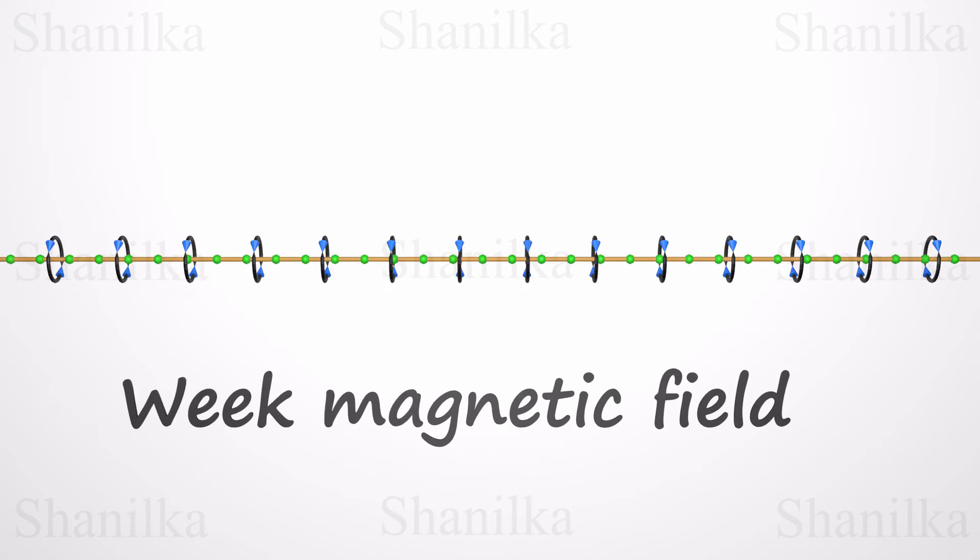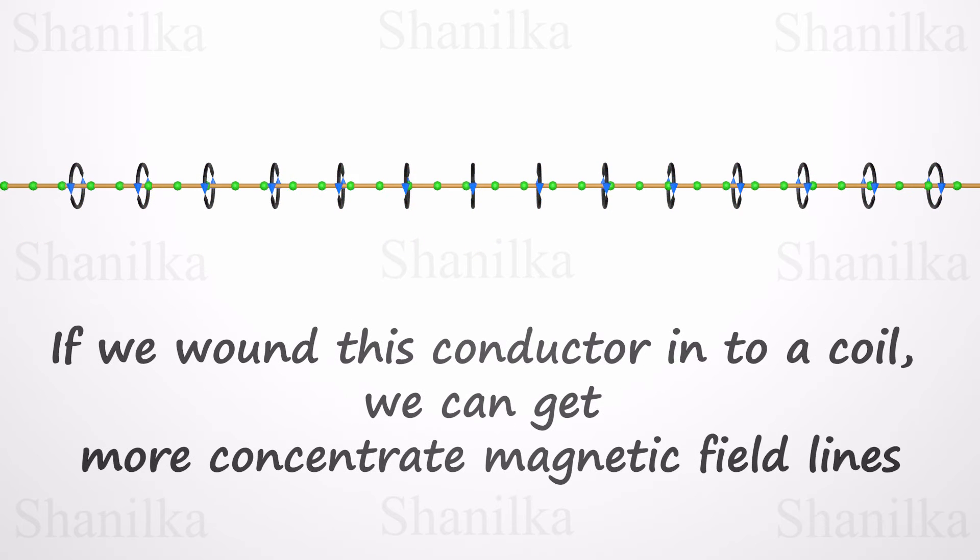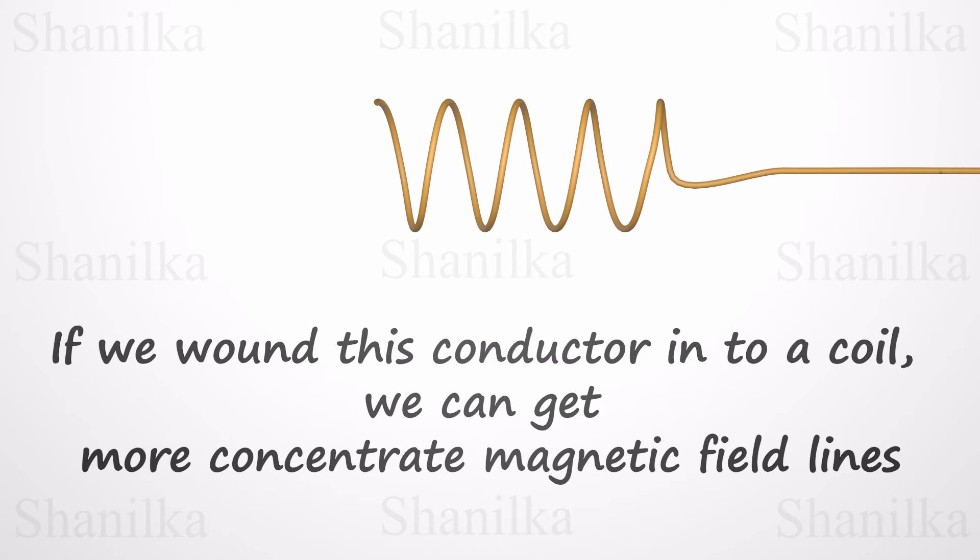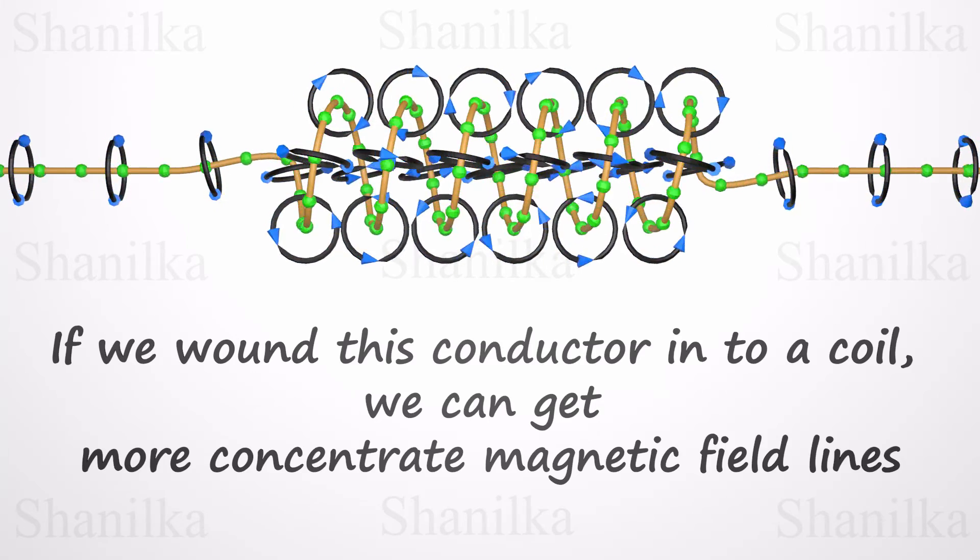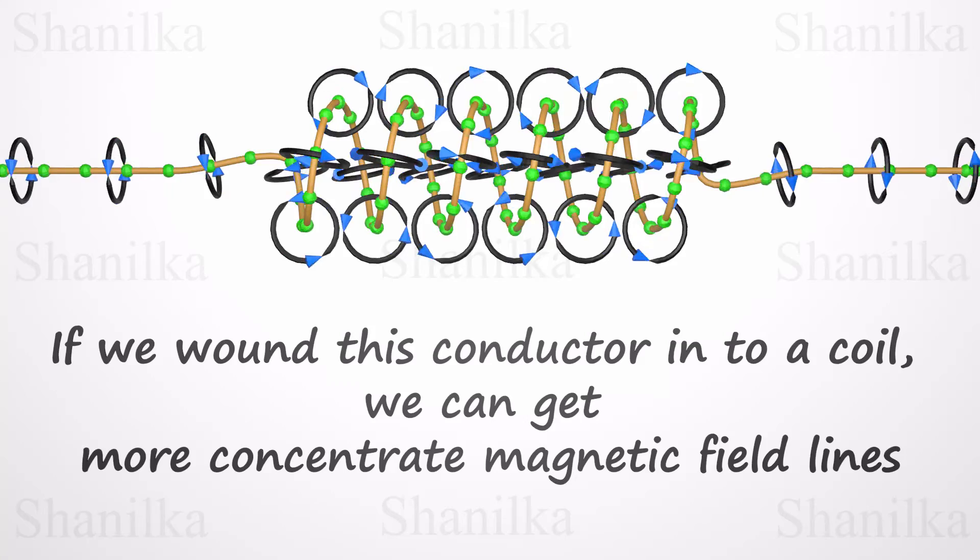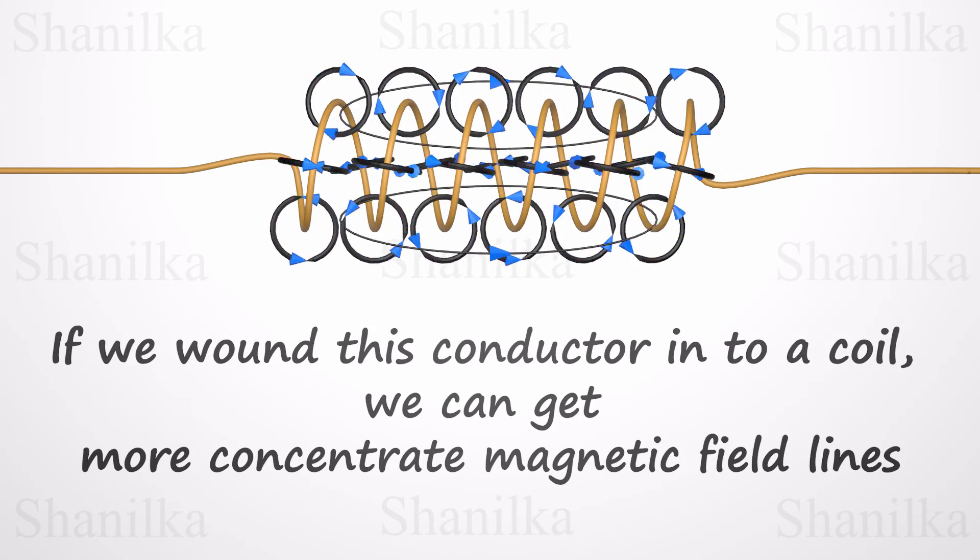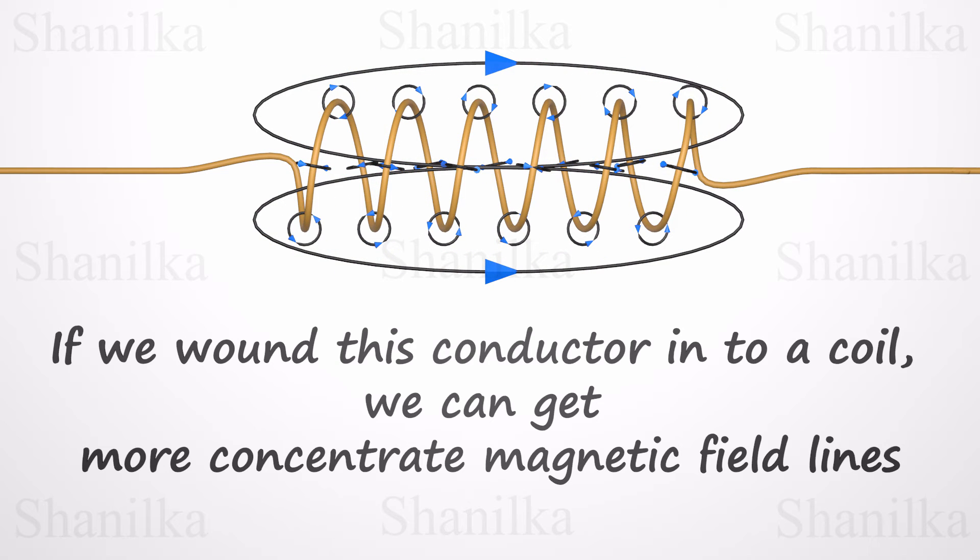A single straight conductor wire only creates a very weak magnetic field. If we wound this conductor into a coil, we can get more concentrated magnetic field lines. So in most cases, electromagnets are created in this way to strengthen the magnetic field. We can draw the magnetic field around a coil like this. It's almost like the magnetic field of a bar magnet.